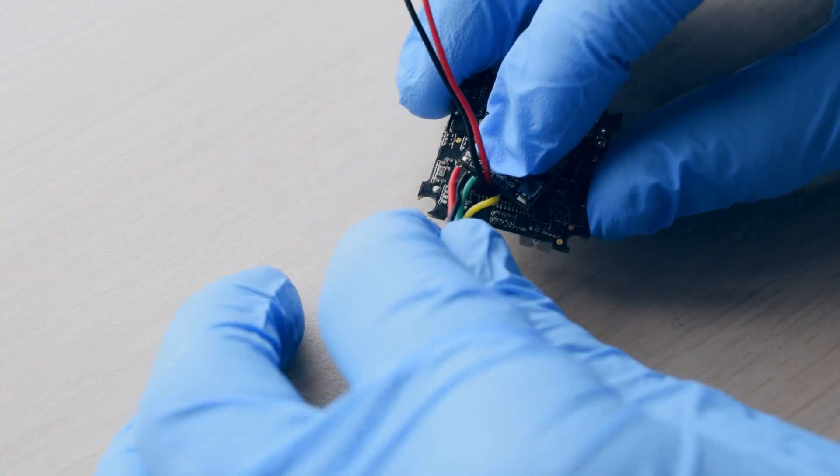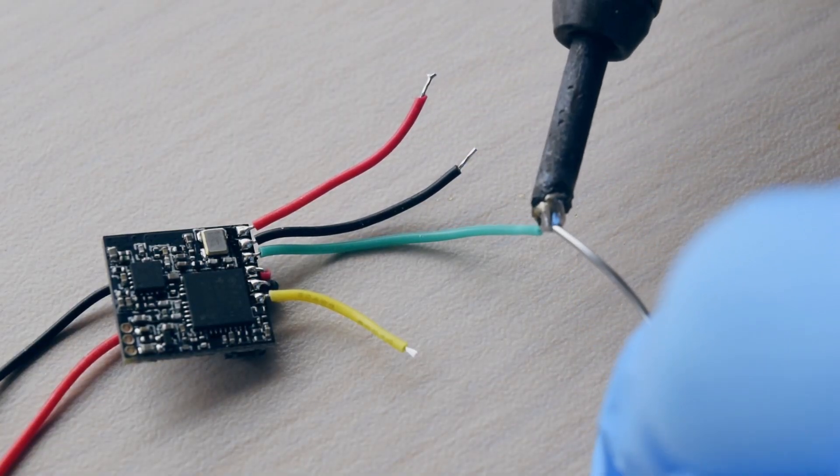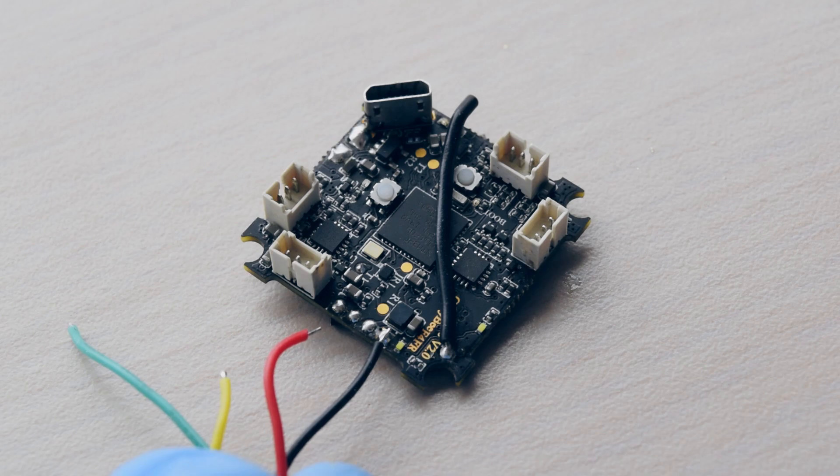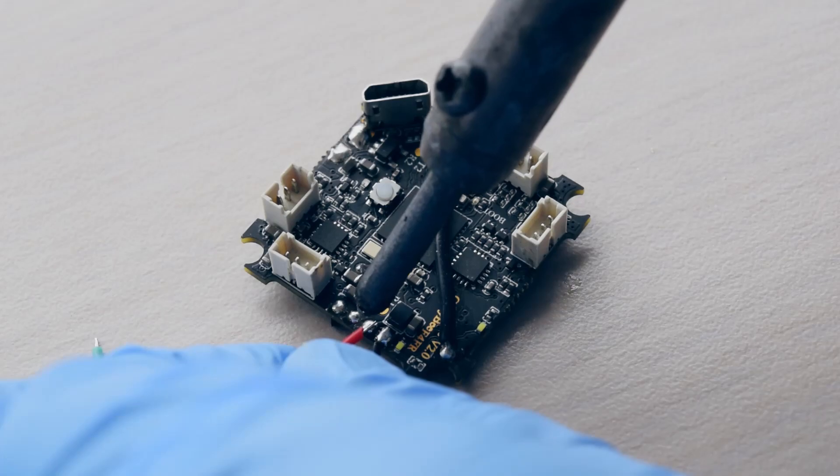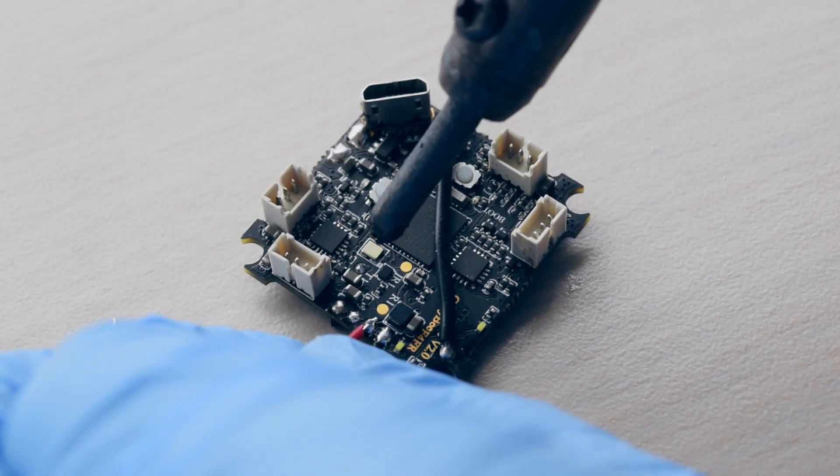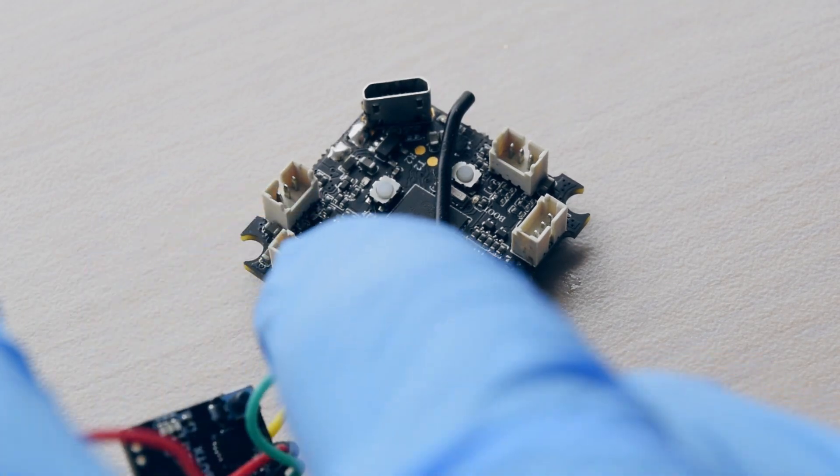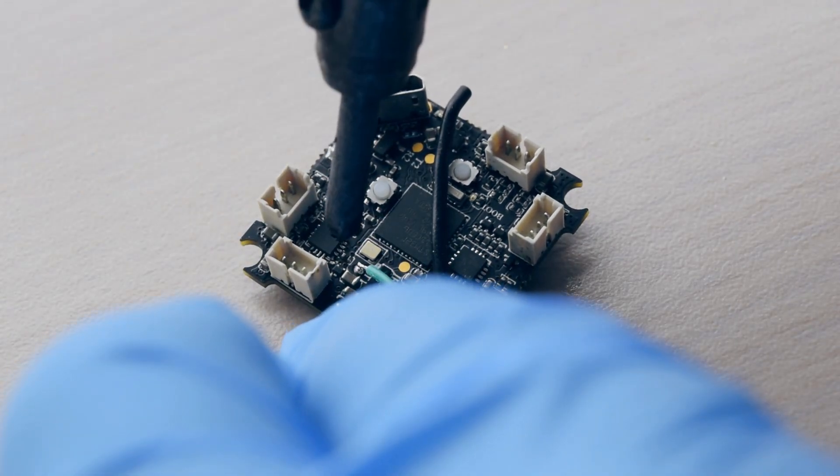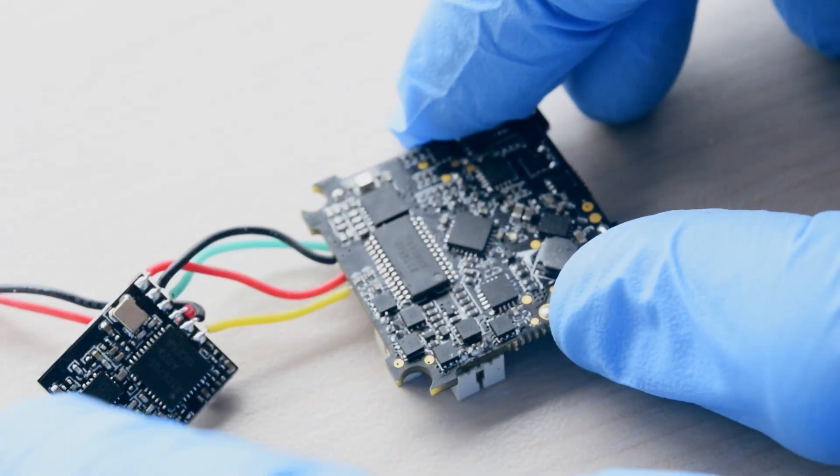After measuring the wires, they can be cut, pre-tinned, and finally soldered. The ground wire goes farthest to the right, followed by the 5 volt, and then the video out, and then the smart audio wire connects to the TX1 pin, which is right here. The VTX will sit right on top of the FC like this.